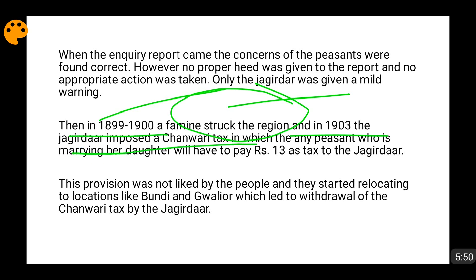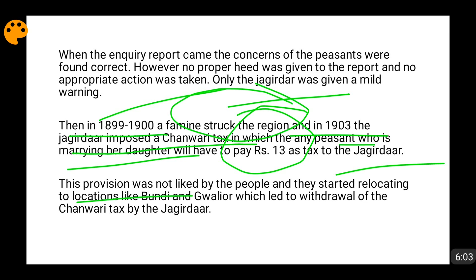Under the Chanwari tax, every peasant marrying off his daughter had to pay 13 rupees to the Jagirdar as a tax. People did not like this provision at all and protested against it. When the Jagirdar didn't yield, the people started relocating to Mundi and Goyalir areas. When the Jagirdar saw people moving away, he became nervous, abolished the Chanwari tax, and gave some concessions so that people would come back.